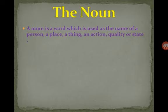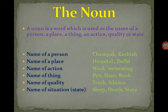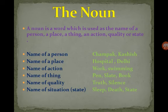Noun is a word which is used as the name of a person, place, thing and action, quality or state. In a slate book, all things — truth, silence — are quality, and next is situation or state, that is sleep, death, or state.